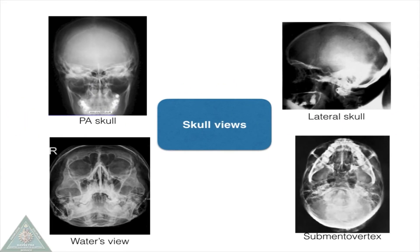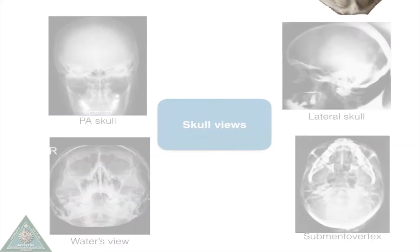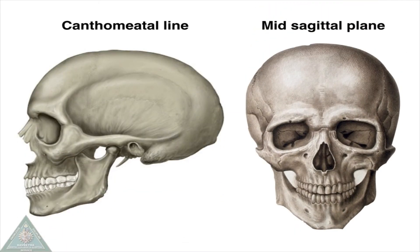The skull views include lateral skull view, submental vertex view, Waters view, and PA skull view. Two landmarks are important in skull views: the cantho-meatal line and the mid-sagittal plane.